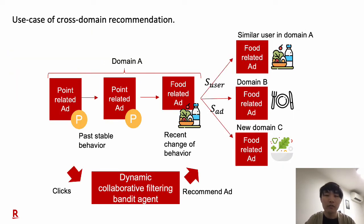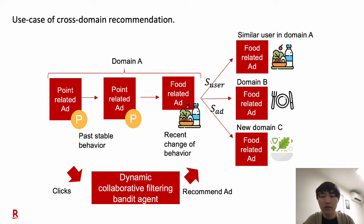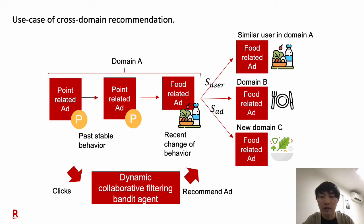Let me talk about a use case first. Let's assume a user was interested in earning reward points and clicked point-related advertisements. Recently, this user came to have an interest in eating delicious food and clicked food-related ads on the e-commerce site. Our model will recommend related restaurants in a restaurant reservation website. Also, our model can recommend related hotels in a newly created website for lodging reservation domain C and improve the cold-start issue of domain C. Our model also recommends food-related ads clicked by the user to similar users in domain A. These kinds of cross-domain and cross-user recommendations are conducted based on similarity functions S-ad and S-user.